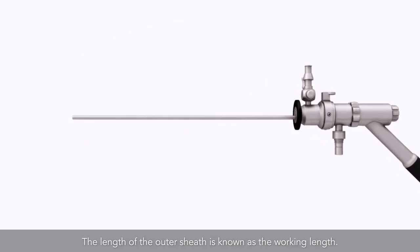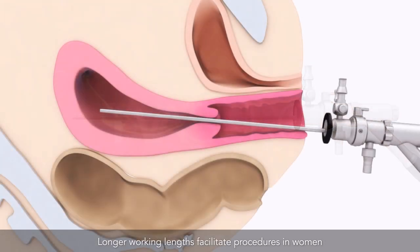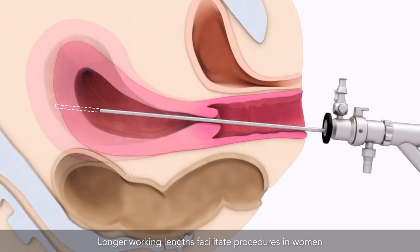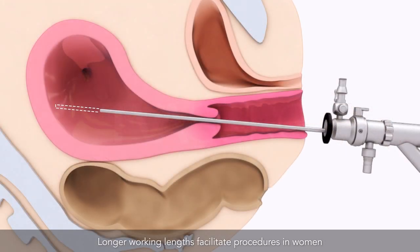The length of the outer sheath is known as the working length. Longer working lengths facilitate procedures in women with a large uterine cavity and/or higher body mass index.